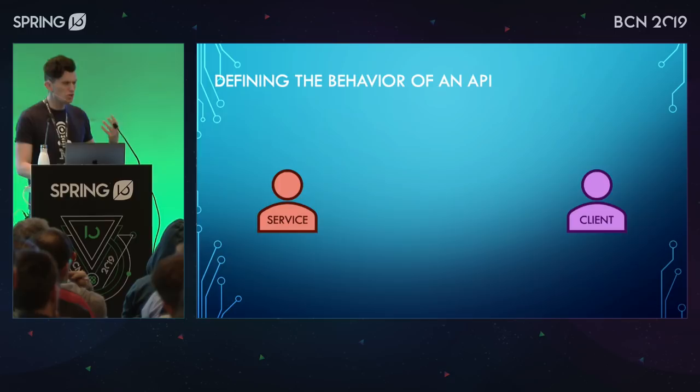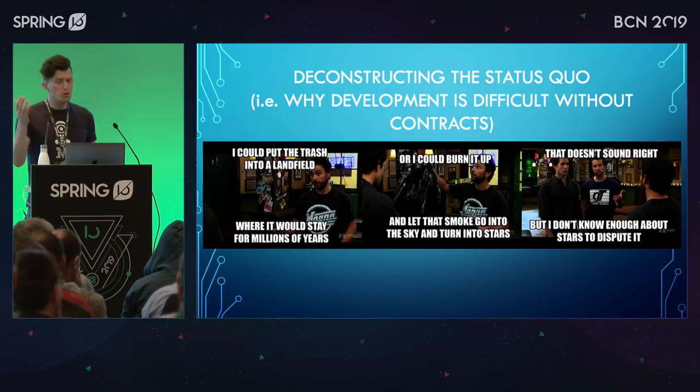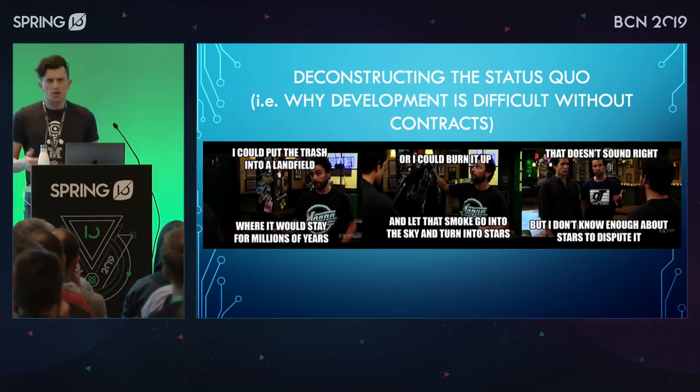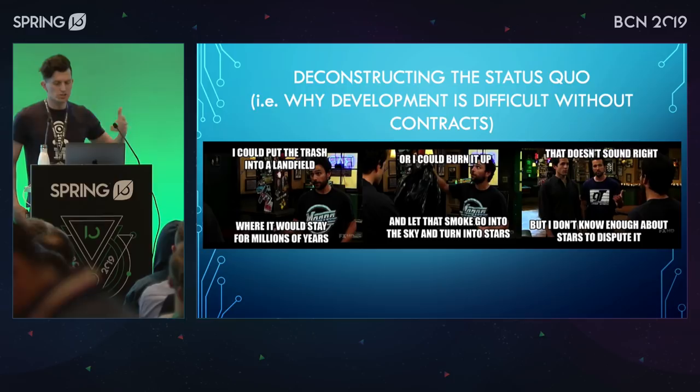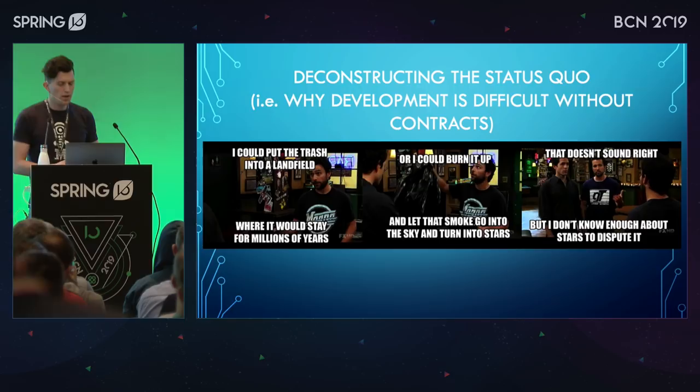So why should you care about this? Only a few people here are actually doing contract-driven development, so obviously people are pushing and deploying code to production right now without it. Why do you need to change? One way I've always found about getting organizations to change is you have to explain what is the current problem with the way we're doing things right now, and I think about this scene from It's Always Sunny in Philadelphia.